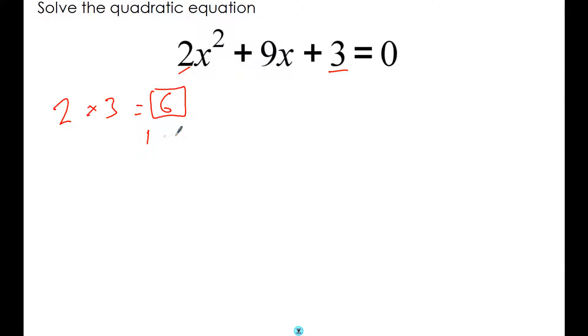2 times 3 is 6, and I write down the factor pairs of 6 and see if I can find a pair that will add up to make 9. It can't be done, so that means that this equation cannot be factorized.